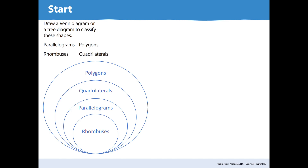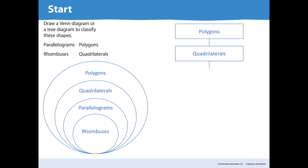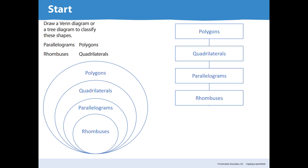If we were to put this in a tree diagram, it would look like this: polygons at the top, quadrilaterals next, then parallelograms, and finally rhombuses.